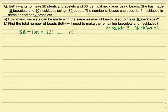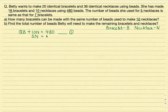Now, the other information we have is that the number of beads required to make 5 necklaces is the same as the number of beads required to make 7 bracelets. So we write: 5N equals 7B. This is Equation 2.